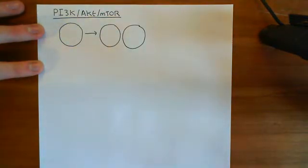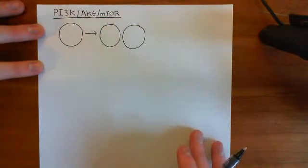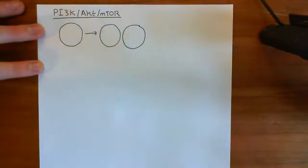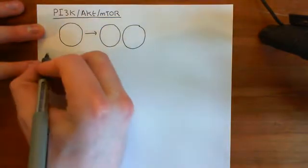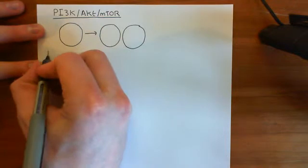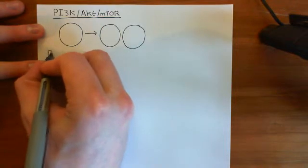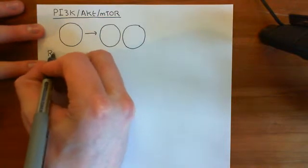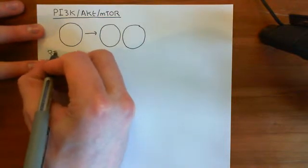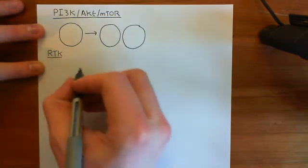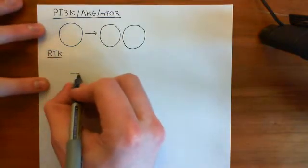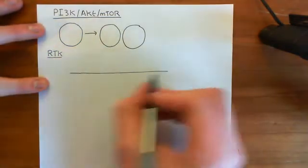This is what the PI3 kinase AKT mTOR pathway is going to do — it's going to activate the translational machinery of the cell. So let's now discuss this pathway. We'll start off once again by just discussing where we've got to with our receptor tyrosine kinase.